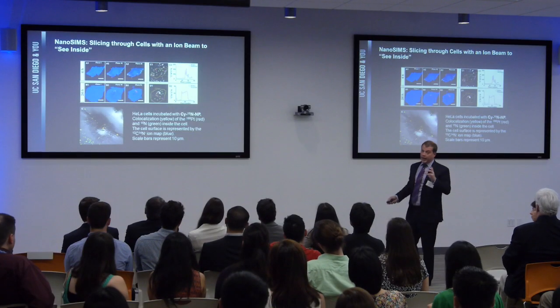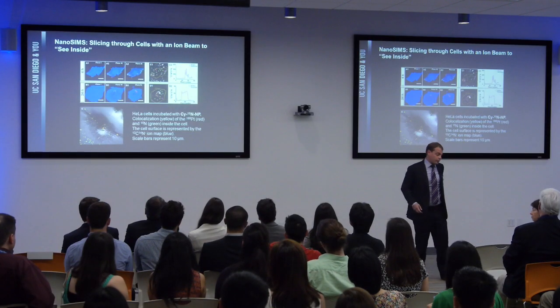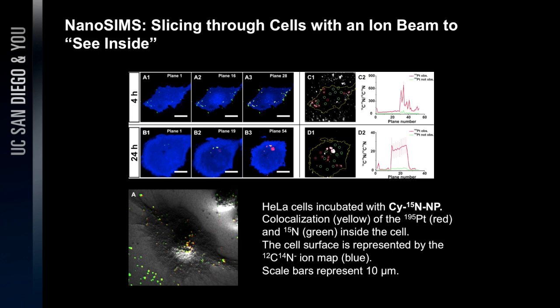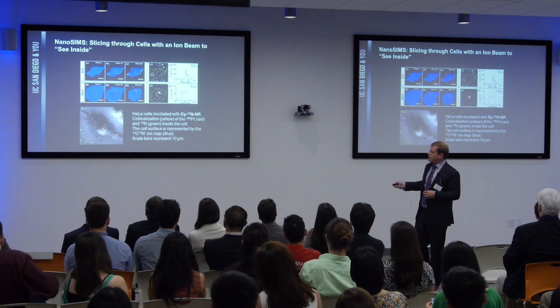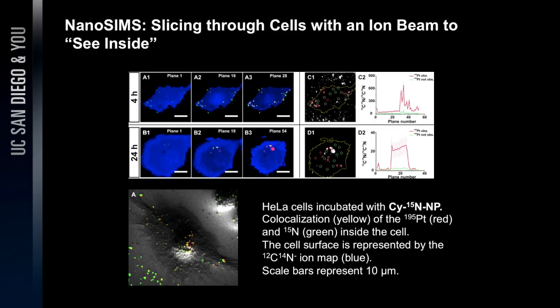This technique is done in collaboration with the National Lab and has never been used like this to image nanoparticles — it's always been used to image natural things like meteorites. We use this tool to actually map out the cell. This is an SEM, an electron micrograph of a cancer cell with our particles stuck inside it.